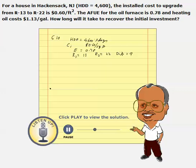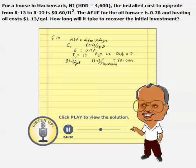We know the price of energy, or cost of energy. We are paying $1.13 to buy a gallon of oil. And when we buy a gallon of oil by paying $1.13, we get 130,000 BTUs. So for every BTU, we pay $0.0000869.